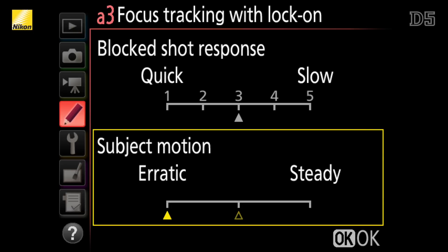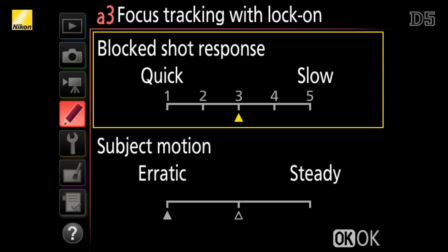You can also choose how long the camera will take before switching focus to a new target. Think of a running back suddenly blocking the view of the quarterback. If you want the camera to instantly focus on the running back, select quick. But if you want to wait for the running back to pass while staying focused on the quarterback, choose slow.